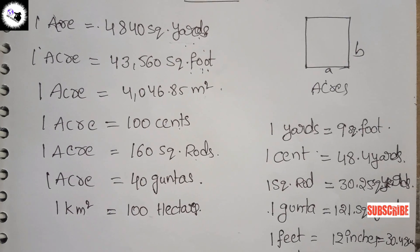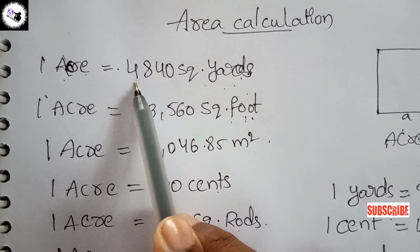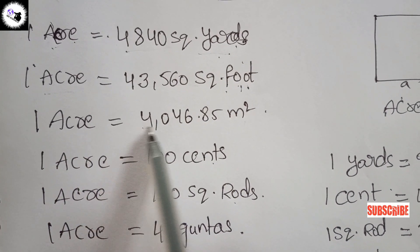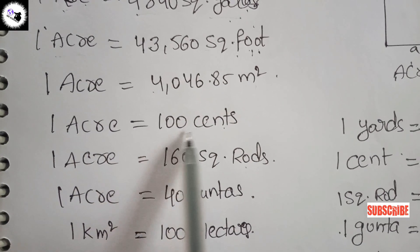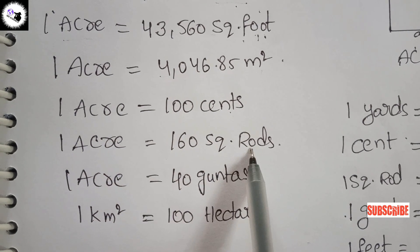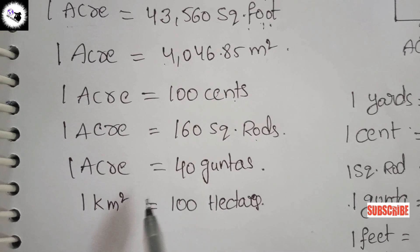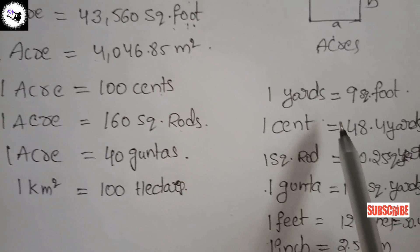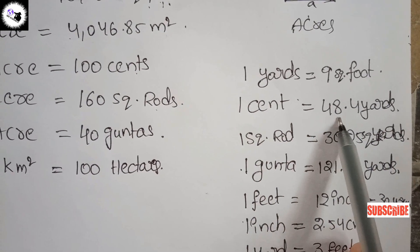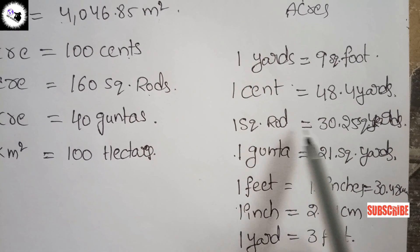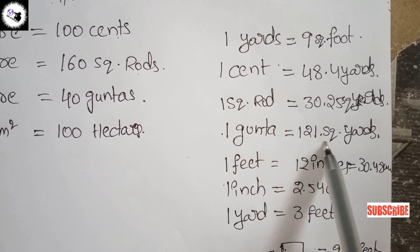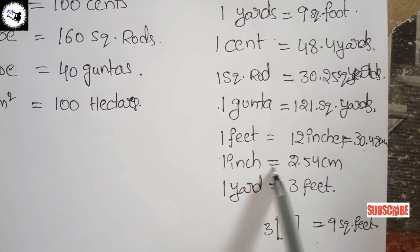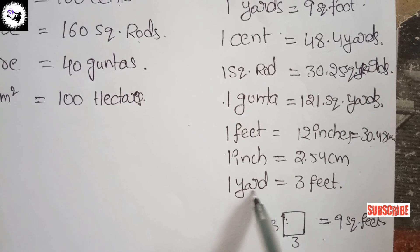Summary of area calculations: one acre is equal to 4840 square yards, 43,560 square feet, 4046.85 meter square, 100 cents, 160 square rods, and 40 guntas. One kilometer square is equal to 100 hectares. One square yard is equal to 9 square feet. One cent is equal to 48.4 yards. One square rod is equal to 30.25 square yards. One gunta is equal to 121 square yards. One feet is equal to 12 inches or 30.48 centimeters. One inch is equal to 2.54 centimeters. One yard is equal to 3 feet.